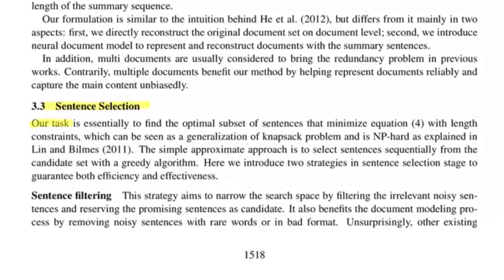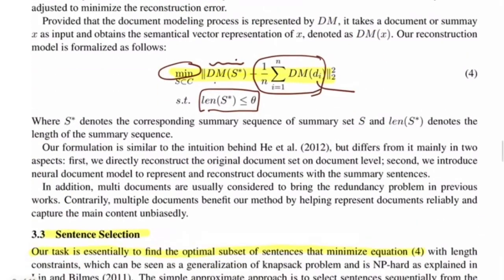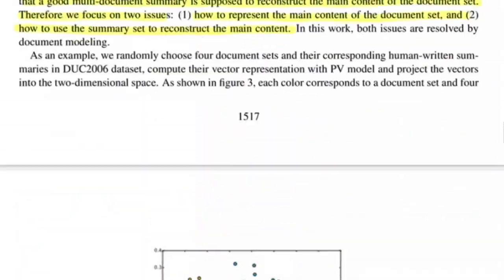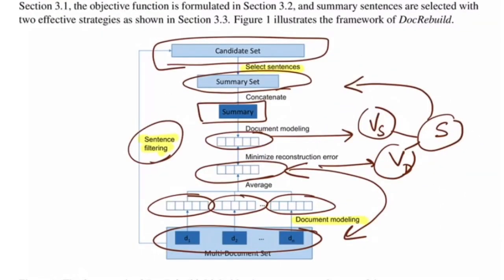For sentence selection, the task is to find the optimal set of sentences minimizing the reconstruction error equation. A simple approximate approach is to select sentences sequentially from the candidate set using a greedy algorithm. As shown in the diagram, the step making the summary set from the candidate set is the greedy selection step — with 100 candidate sentences, you pick each sequentially, concatenate them as your summary, and then compute the reconstruction error.